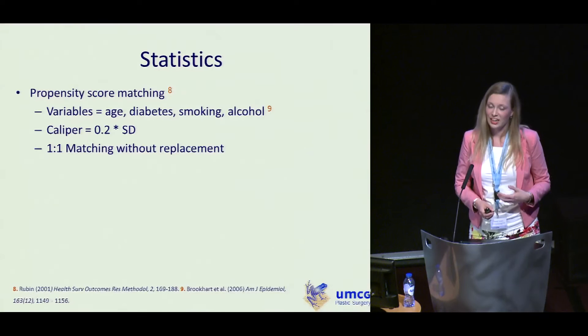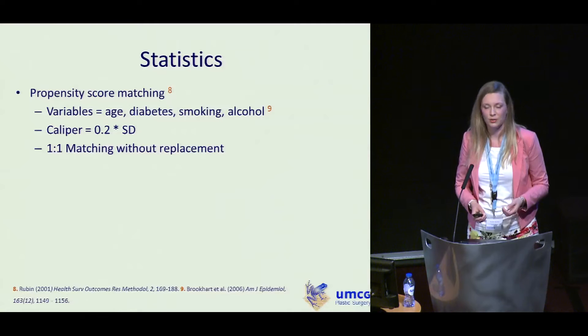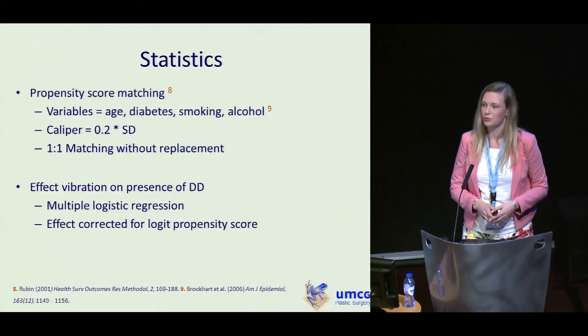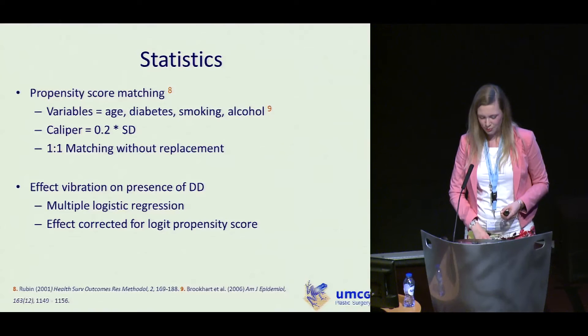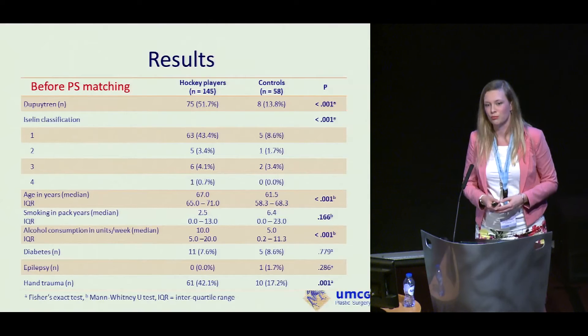We used propensity score matching to balance the groups, using the variables age, diabetes, smoking, and alcohol. The caliper width was 0.05 times the standard deviation, and the type of matching was one-to-one without replacement. The effect of vibration on the presence of DD was determined using multiple logistic regression analysis, controlling for the logit of the propensity score. Many people are not familiar with propensity score matching, so I'll show the descriptive statistics before and after.